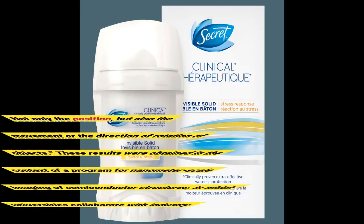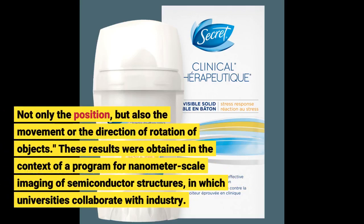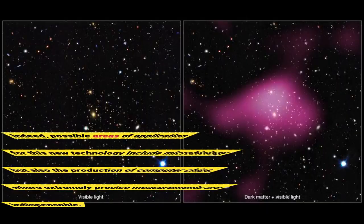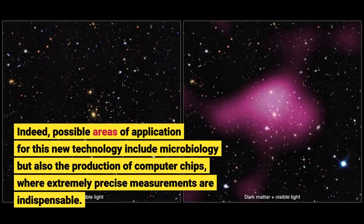Not only the position, but also the movement or the direction of rotation of objects. These results were obtained in the context of a program for nanometer-scale imaging of semiconductor structures, in which universities collaborate with industry. Indeed, possible areas of application for this new technology include microbiology but also the production of computer chips, where extremely precise measurements are indispensable.